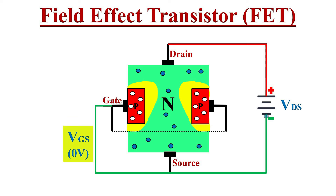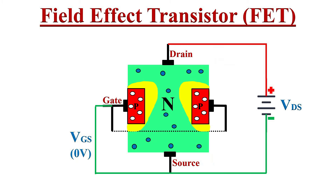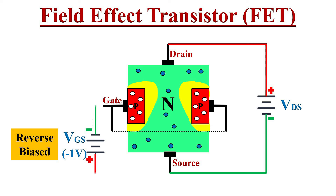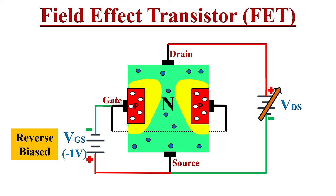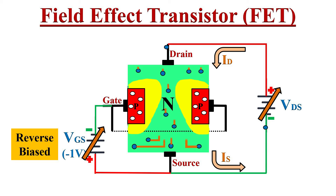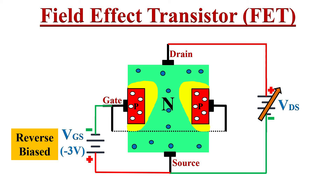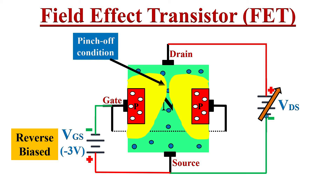So far in our discussion we assumed VGS equals zero. But the gate to source voltage can control the drain current. Let's make VGS more and more negative, or reverse biased. Assume VGS equals minus 1 volt — as we keep increasing VDS, the width of the depletion region will increase and the current flow will reduce. Increasing VGS further to minus 3 volts increases the depletion region width further and the pinch-off or saturation of drain current is reached at a lower voltage of VDS.